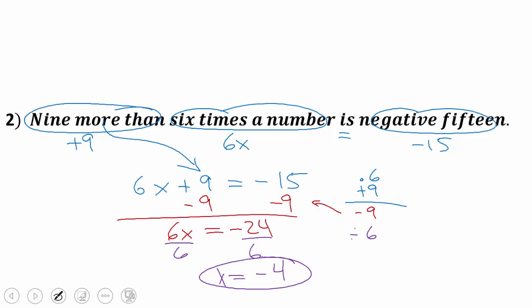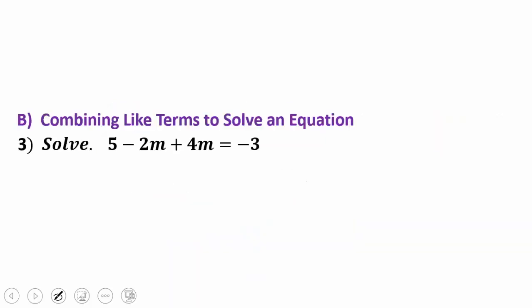Here comes something that's just a slight bit different, ladies and gentlemen, with this topic tonight. And that is that we might have to combine some like terms before we solve the equation. So let's take a quick look at what we have here. In example three, we have 5 − 2m + 4m = −3. Well, my variable, I have two m's. I don't want to solve for two m's. I'm going to get that m together. In fact, I'm going to combine those terms.